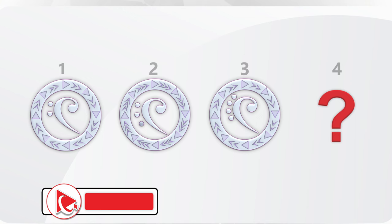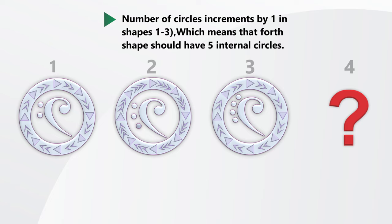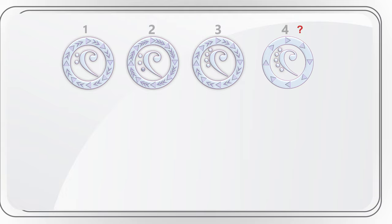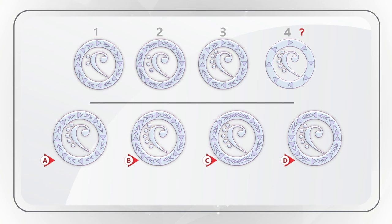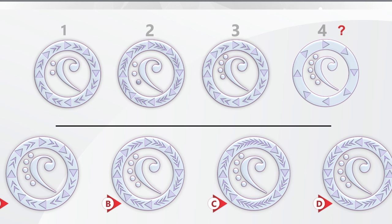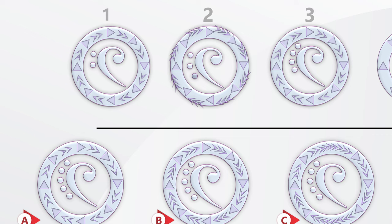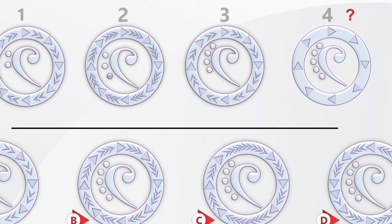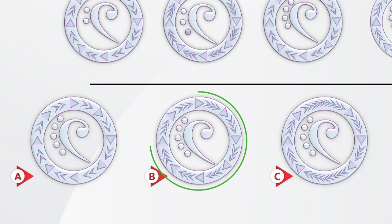The number of circles increments by 1 in items 1 through 3. For example, item 1 has 2 circles, item 2 has 3 circles, and item 3 has 4 circles, which means that item 4 should have 5 circles. But all choices A, B, C, and D have 5 small circles inside. Which leads us to the conclusion that the number of checks between triangles defines the final answer. The number of checks alternates from 2 in item 1 to 3 in item 2, then back to 2 in item 3, and should be 3 in item 4. This is why the correct answer is choice B, because it has 3 checks in between triangles.